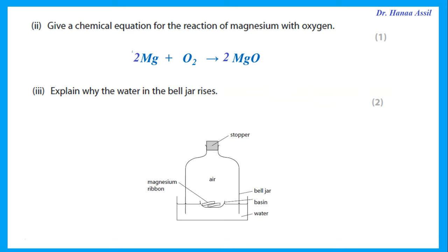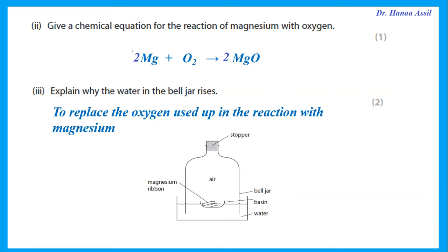Explain why the water in the bell jar rises. Magnesium is reacting with the oxygen in the air, removing it from the air inside the bell jar. The water rises to replace the volume of oxygen that has been used up in the reaction with magnesium.